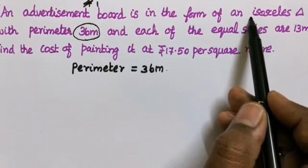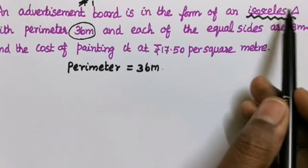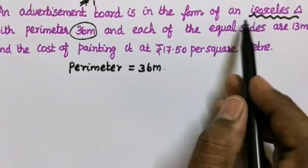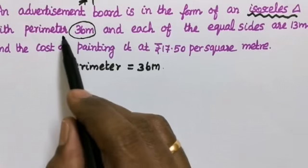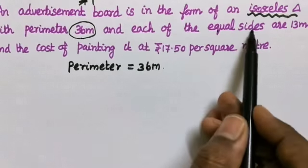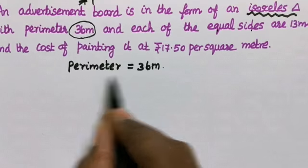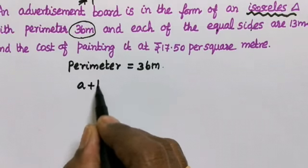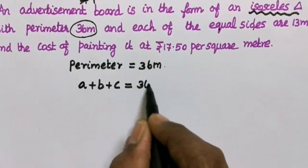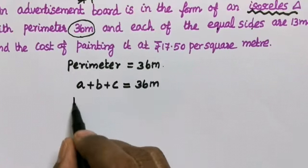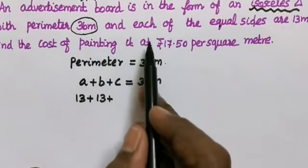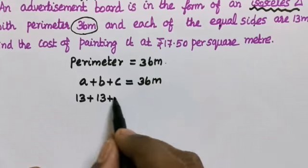Given: isosceles triangle — 2 sides are equal, 1 side is different. Perimeter is 36 meter. Equal sides value: triangle has 3 sides total, so a plus b plus c is equal to 36 meter. So a is 13, and b is also 13, since each of the equal sides are given as 13.